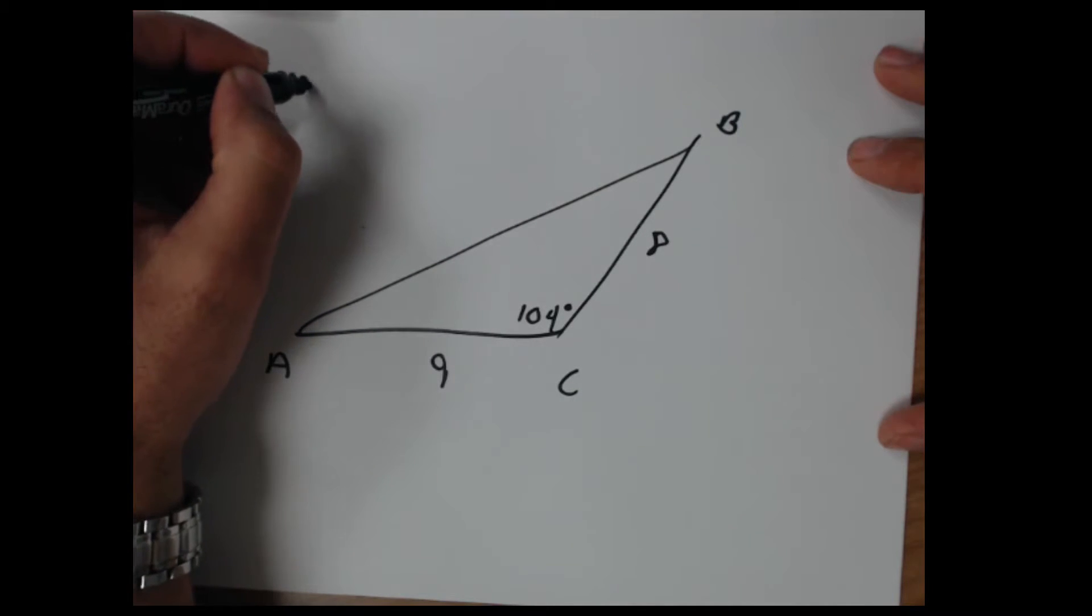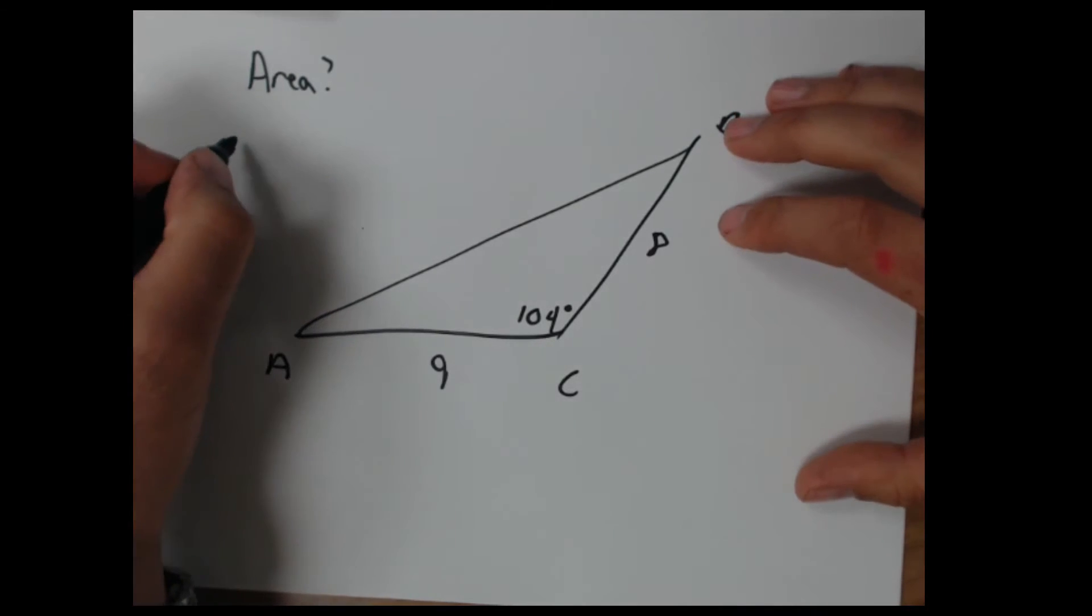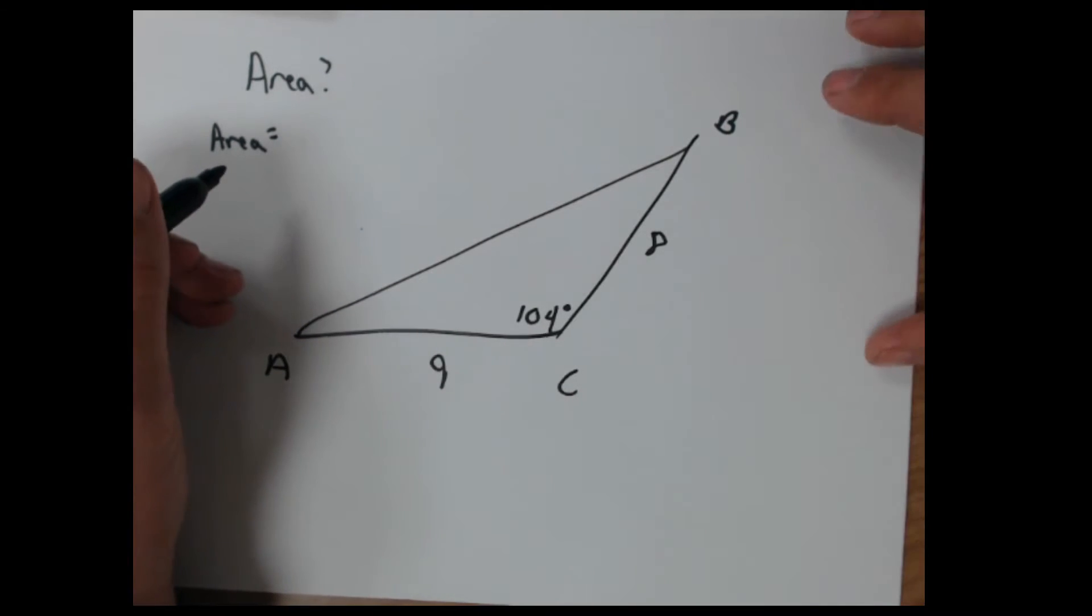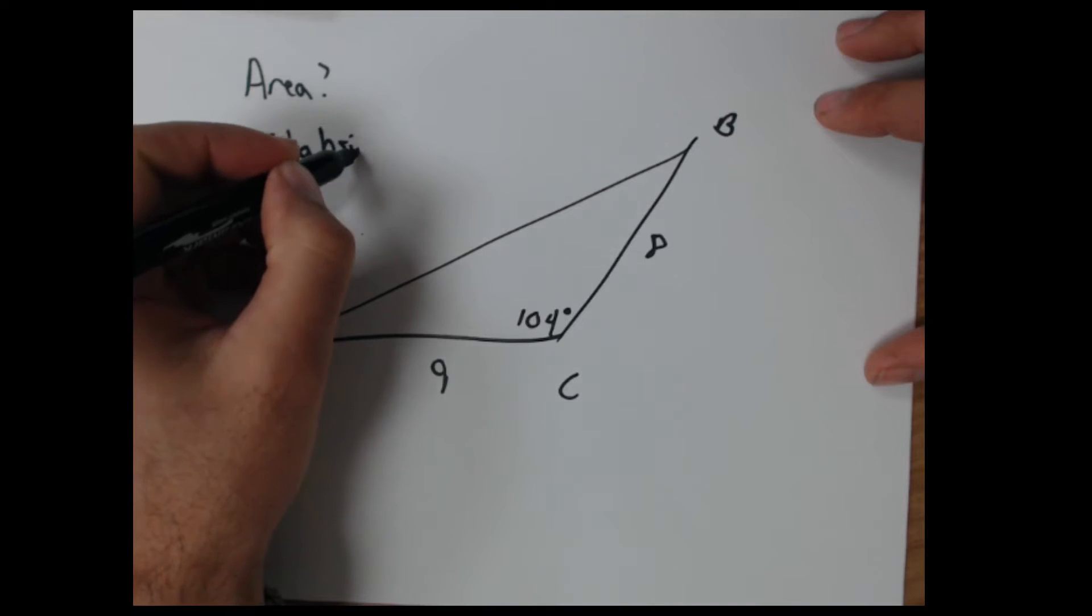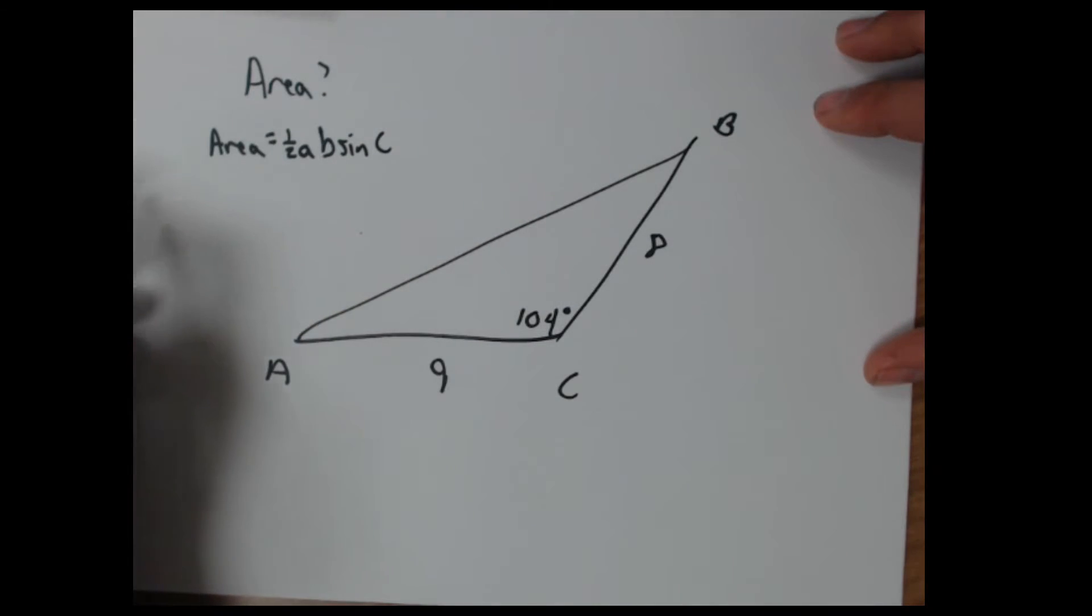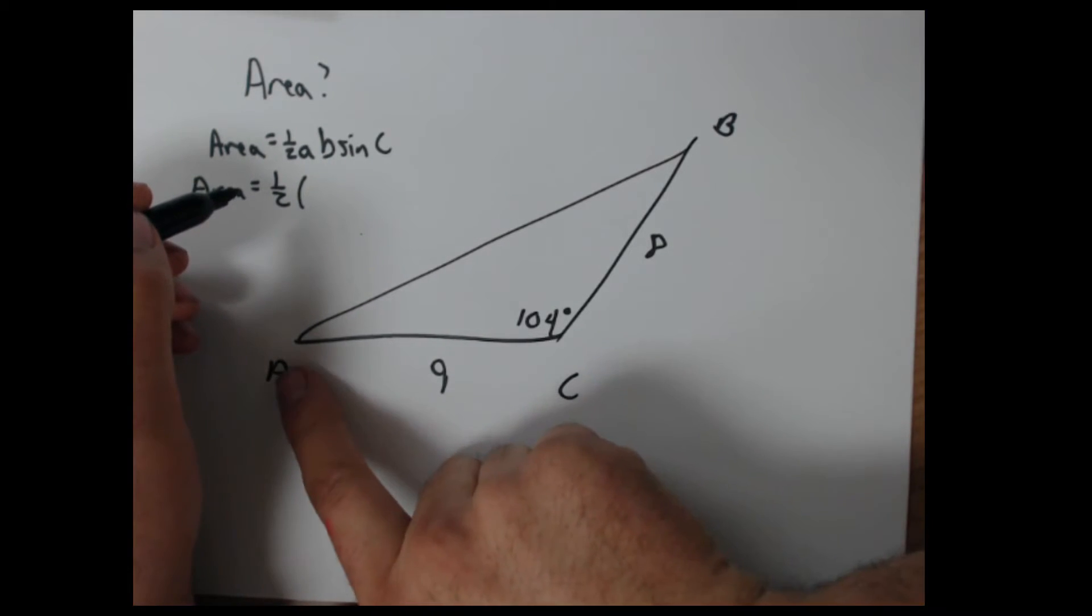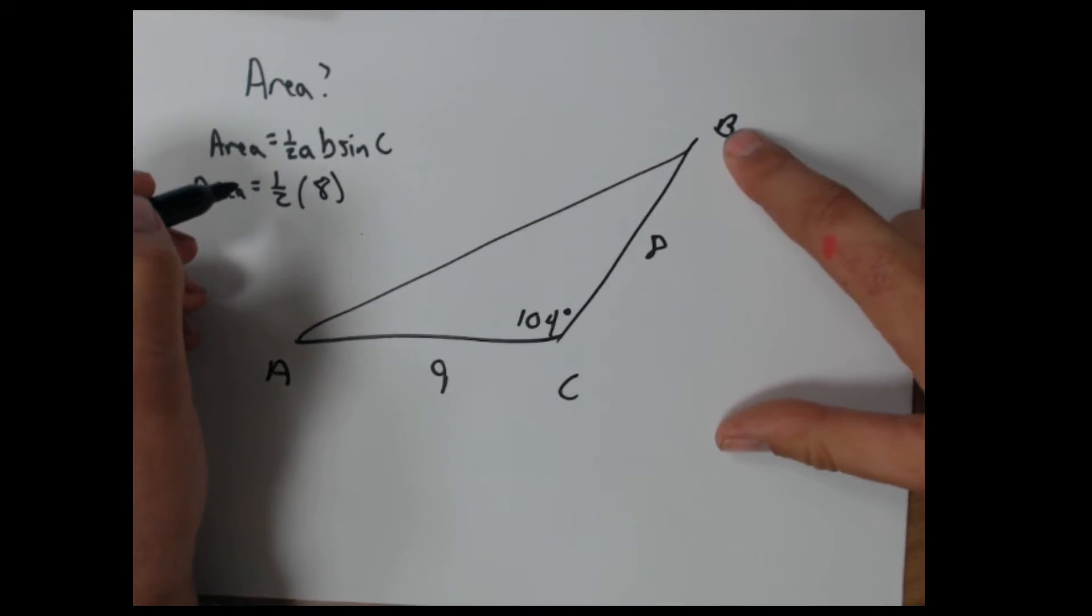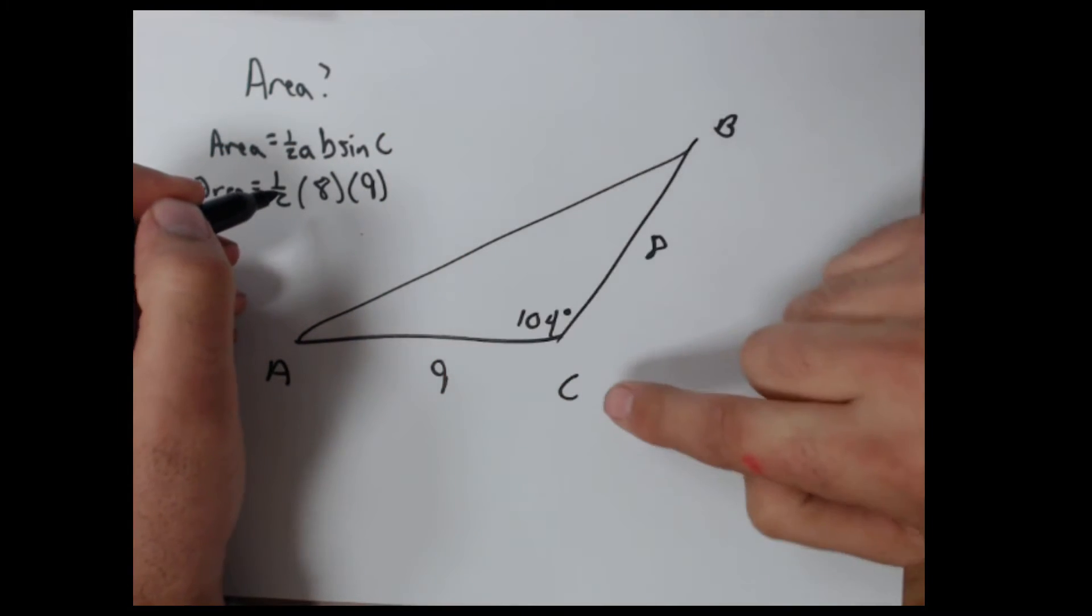So I'm looking for area. Well, I can use one of my formulas. And I know that the area equals, in this case, I want the angle that's here at C. So I want side A, B. Don't forget your little one half. And it's sine of angle C. Plug in all the pieces you know. You know one half. What is side A? Well, that's opposite of angle A. That's 8. What's side B? That's opposite angle B. So that's 9. And then angle C is the 104.